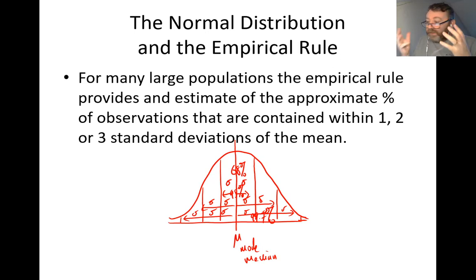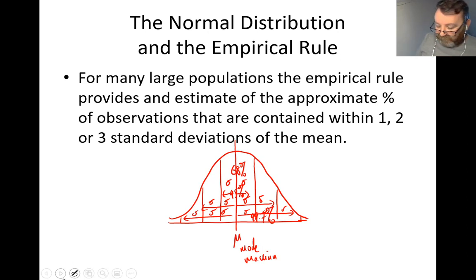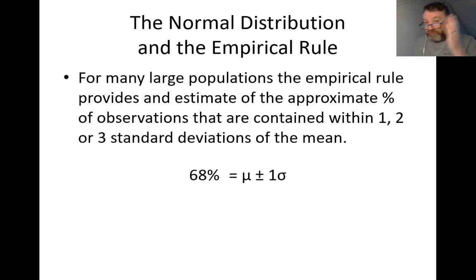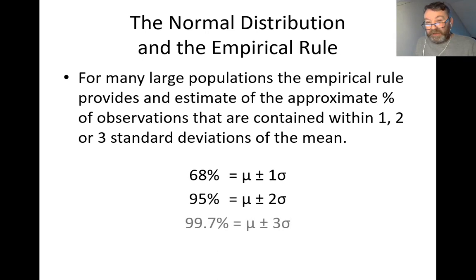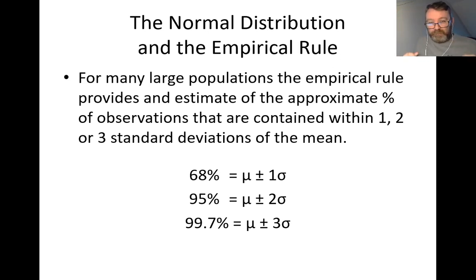The standard deviation is a statistic calculated on your calculator that averages out the deviation of all the data points in a set. To summarise the empirical rule: 68% of the population lies within plus or minus one standard deviation of the mean; 95% within two standard deviations; and 99.7% within three standard deviations. It sounds complex but it's quite simple — it's really just stating the obvious.